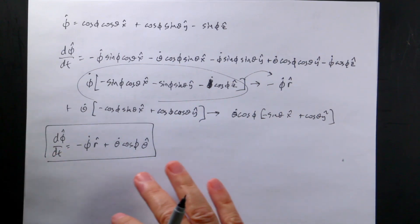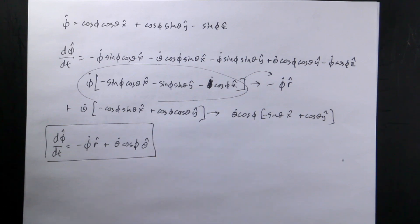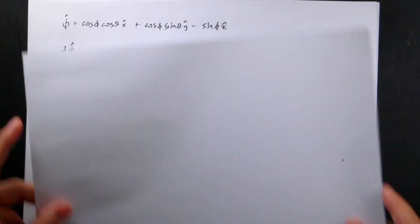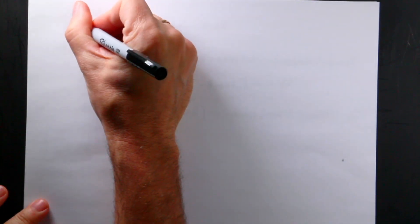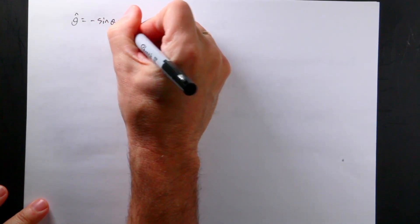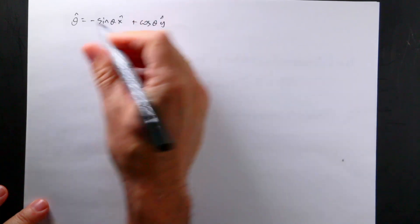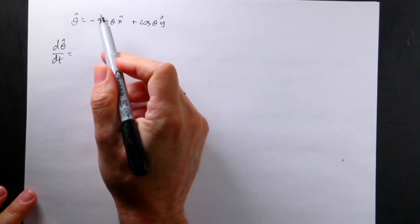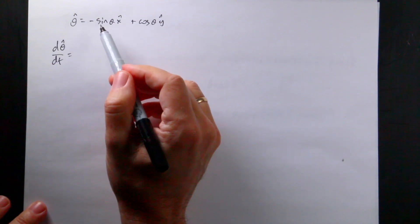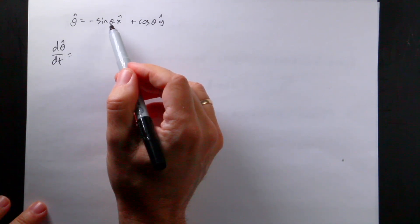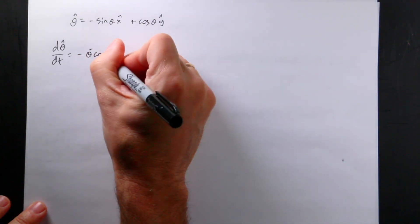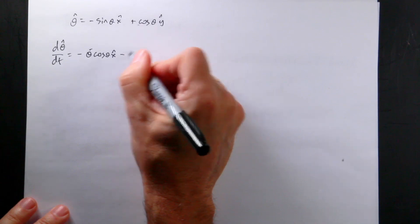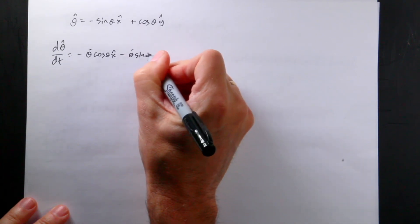Now for theta_hat, which has the biggest trick. Theta_hat equals negative sine(theta) x_hat plus cosine(theta) y_hat. Taking d(theta_hat)/dt: the derivative of sine(theta) gives theta_dot cosine(theta), so I get minus theta_dot cosine(theta) x_hat. For the second term, the derivative of cosine(theta) gives minus sine(theta), so I get minus theta_dot sine(theta) y_hat.